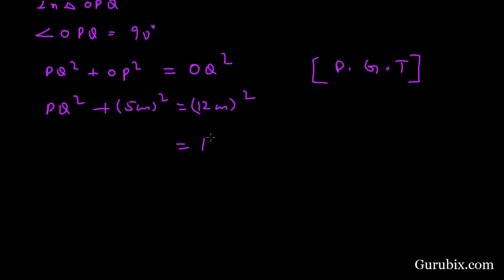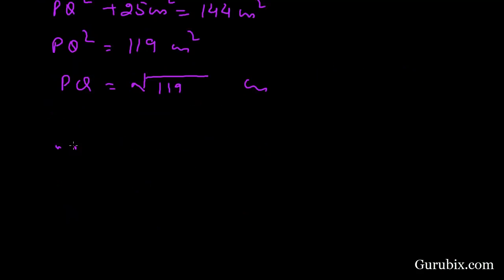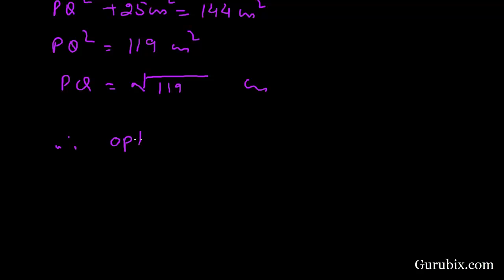OQ is 12 centimeters and OP is 5 centimeters. So 144 equals PQ squared plus 25. Therefore PQ squared equals 119 centimeters squared, which means PQ equals the square root of 119 centimeters. Therefore option D is correct. This is the solution of the question. Thank you.